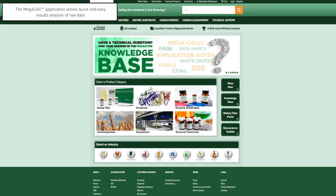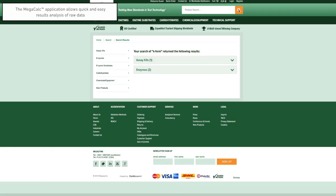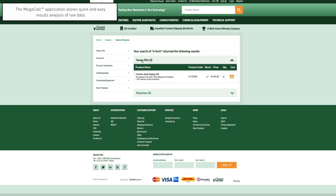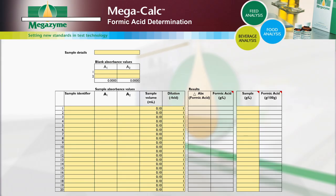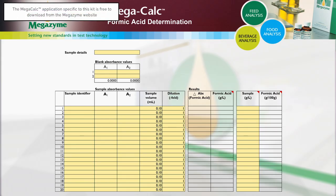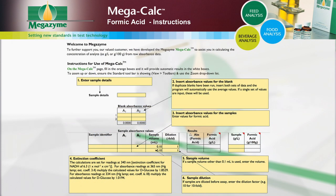Megazyme has also developed specific Excel-based mega-calc applications for each Megazyme kit to allow quick and easy results analysis. Results can be analysed using the mega-calc application specific to this formic acid kit, which is available to download free of charge from the Megazyme website.